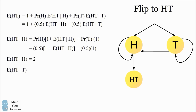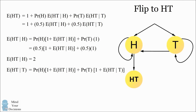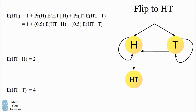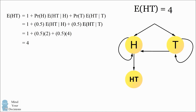We'll do a similar thing and calculate the expected number of flips from the tails state. There's a 50% chance we remain in the tails state, and a 50% chance we go to the heads state. Since we know the expected number of flips from the heads state is 2, we substitute that in. Solving gives the expected number of flips from the tails state equal to 4. Substituting both quantities into our original equation, we find the expected number of flips to HT is equal to 4. So on average, it'll take 4 flips to get a heads followed by a tails.